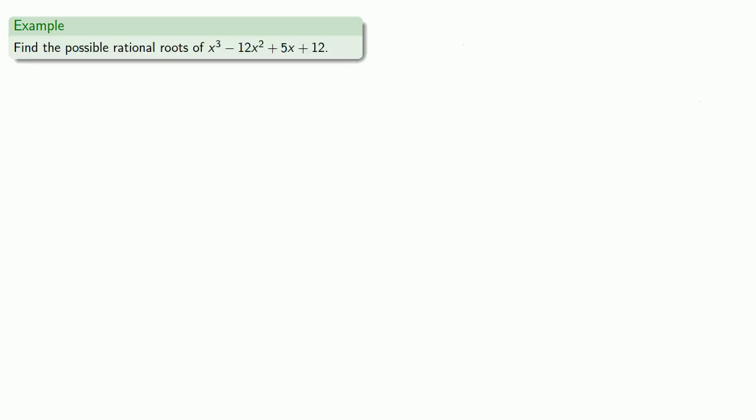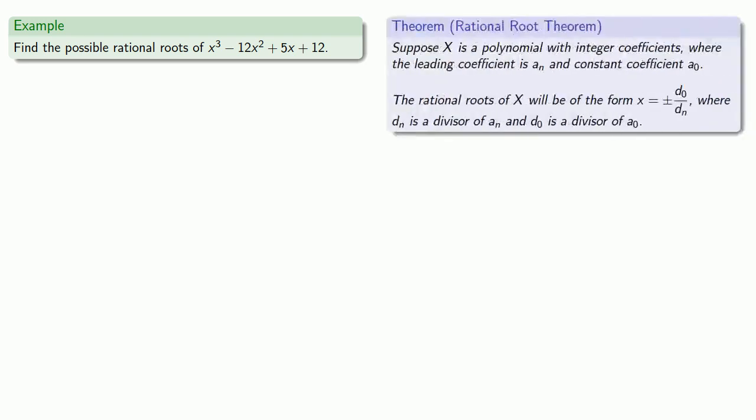For example, let's try to find the possible rational roots of x cubed minus 12x squared plus 5x plus 12. So the rational root theorem guarantees that if X is a polynomial with integer coefficients, got it, then our rational roots will be of the form plus or minus a divisor of our constant over a divisor of our leading coefficient. And so this means that our roots will be of the form plus or minus a divisor of 12 over a divisor of 1.